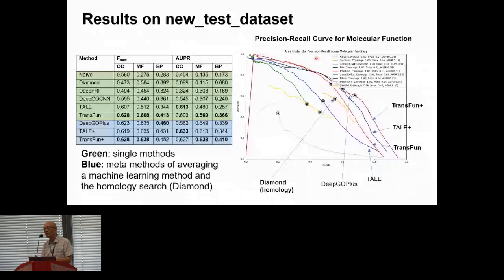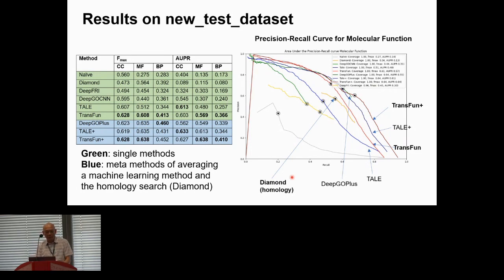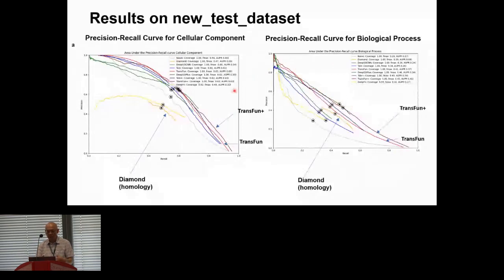Looking at precision-recall curves for the molecular function category, the outermost curve is TransFun+, our meta method, followed by TAIL+, then TransFun alone. DIAMOND score shows only a small range of the precision-recall space, while all machine learning methods provide nearly the full range of precision-recall for users to choose from — an additional advantage beyond just higher accuracy. We see similar patterns in the cellular component and biological process categories.